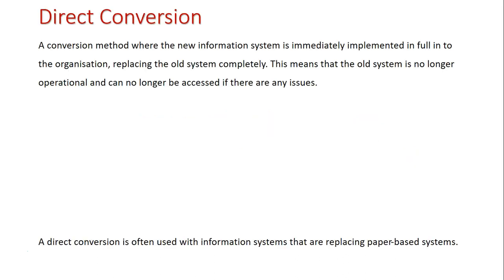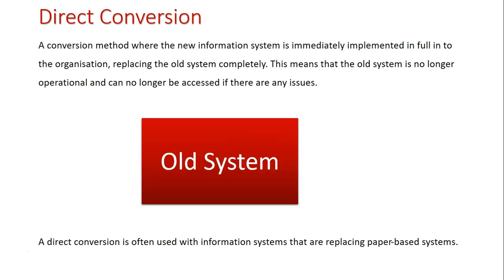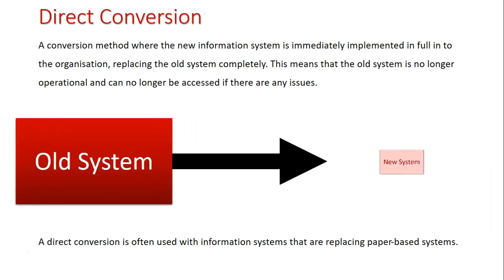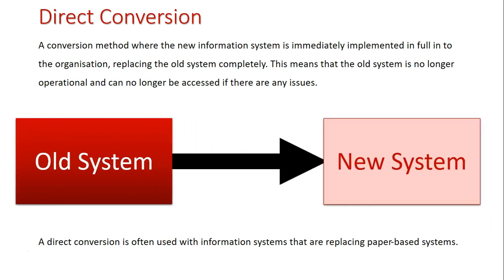The first method we're going to look at is a direct conversion, which is a method where the new information system is immediately implemented in full to the organization, replacing the old system completely. This means the old system is no longer operational and can no longer be accessed if there are any issues. The old system gets replaced straight away by the new system — no more old system. This conversion method is commonly used for replacing paper-based systems, completely getting rid of the old system because it's not up to the technical standard.